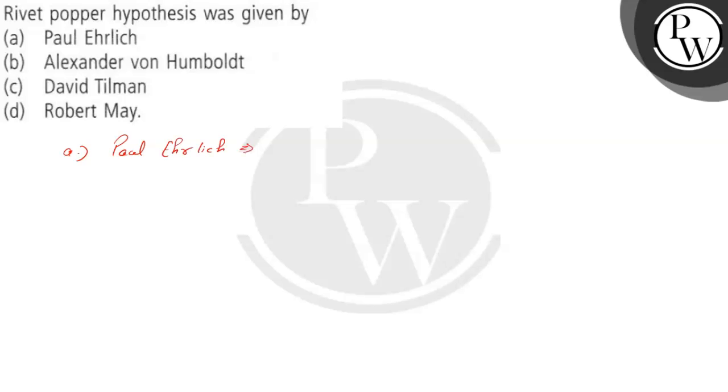Paul Ehrlich proposed the Rivet Popper hypothesis. And according to this hypothesis, he suggested the importance of species richness.